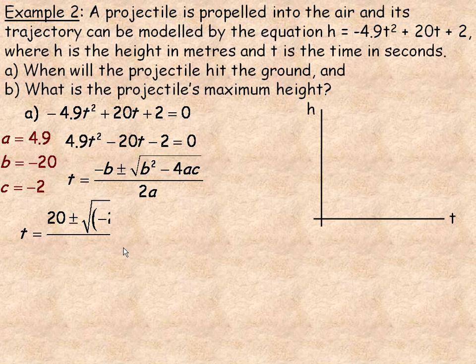We substitute in the values. Of course, negative negative 20 is 20, plus or minus the root of negative 20 squared, because that's the b squared, minus 4 times 4.9 times negative 2, over 2 times 4.9.